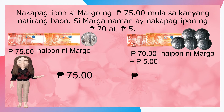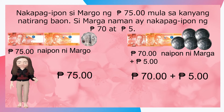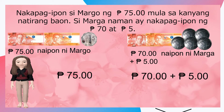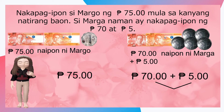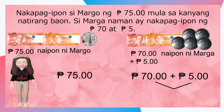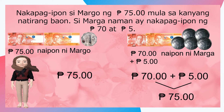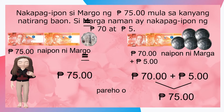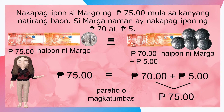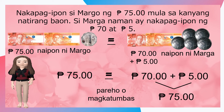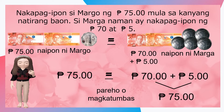Pitumput limang piso at pitumpung piso at limang piso — may napapansin ka ba? Tama! Kapag pinagsama natin ang pitumpung piso at limang piso, ito ay magiging pitumput limang piso. Kung ganoon, pareho lamang o magkatumbas ang perang naipon ni Margo at ni Marga. Kaya, ang ating ilalagay ay equals.